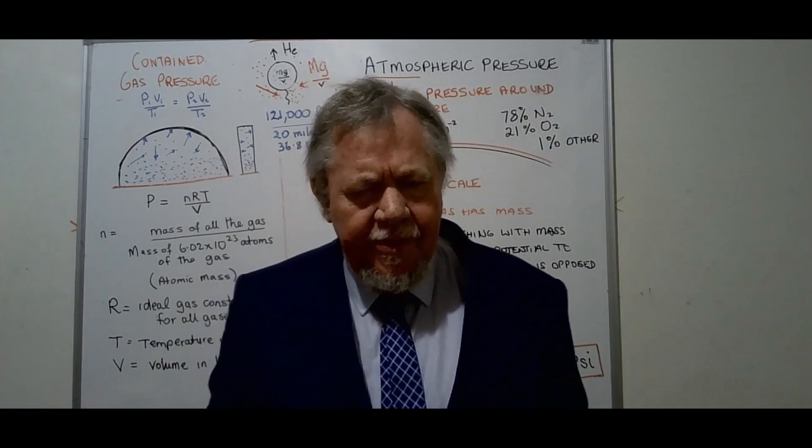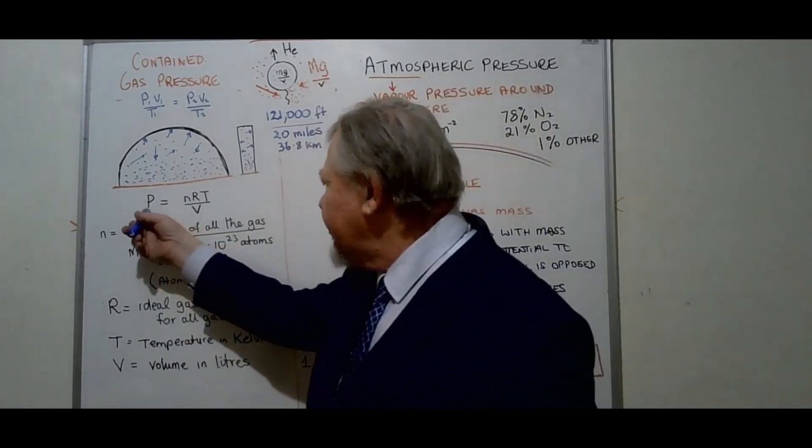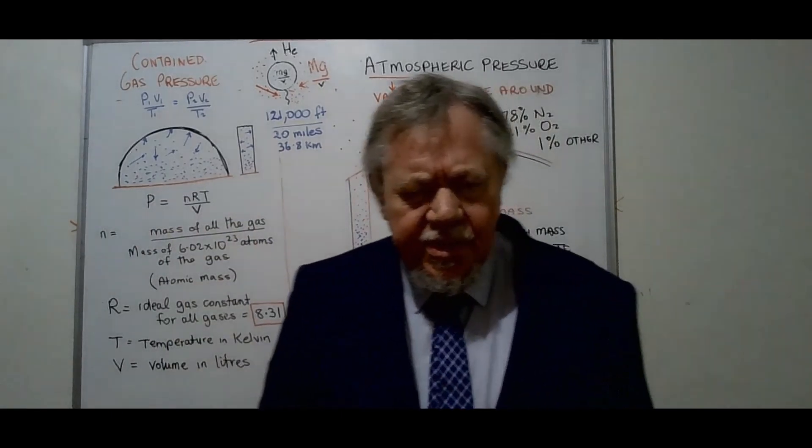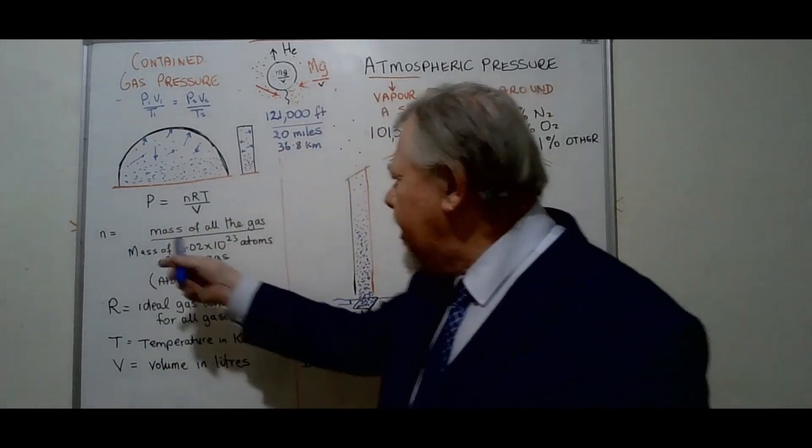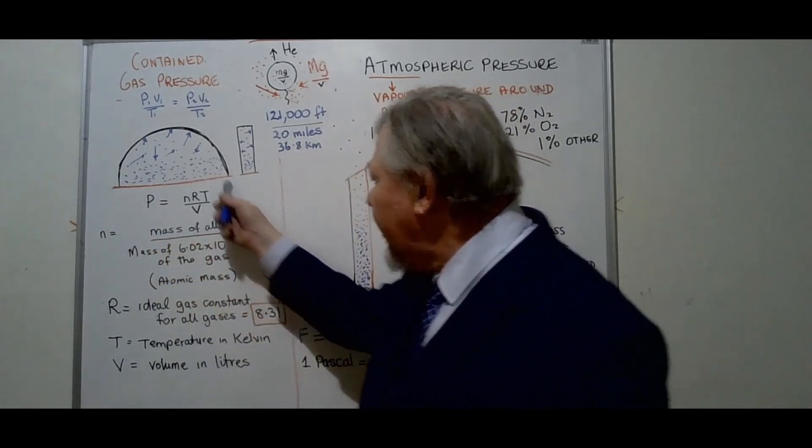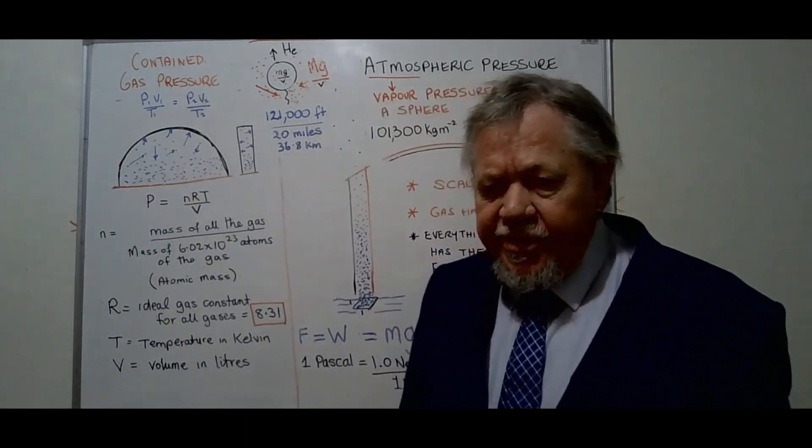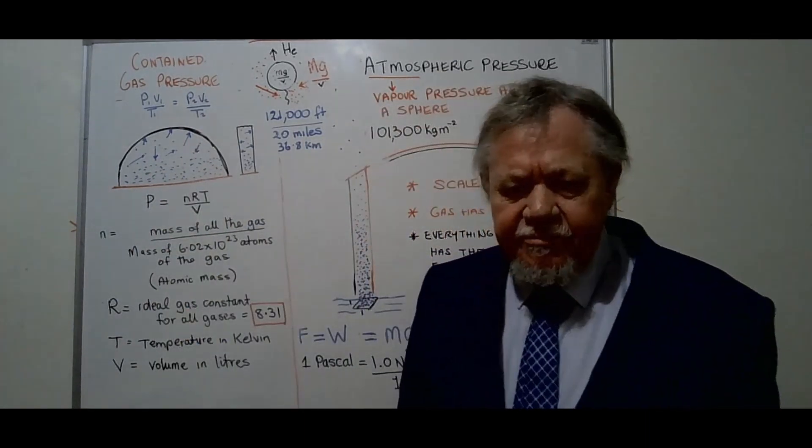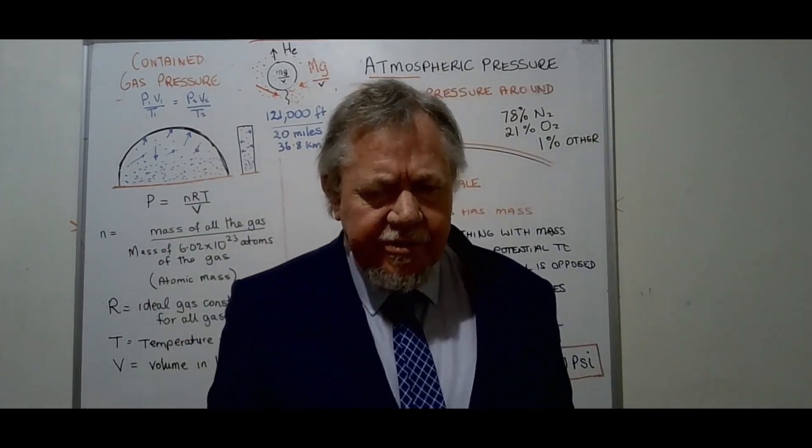Now the chemists needed more than that, so they came up with PV equals nRT. And if you see, pressure then is equal to nRT over volume. Okay, now what is n? N is the number of moles, mass of all the gas. So that's all the gas, the mass of it all right. And yes, gas particles have mass.